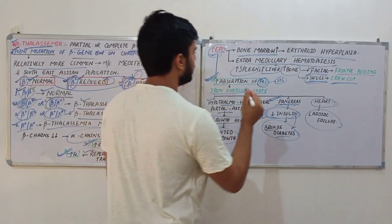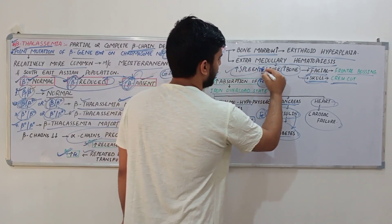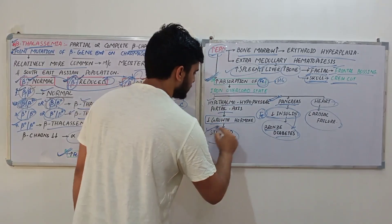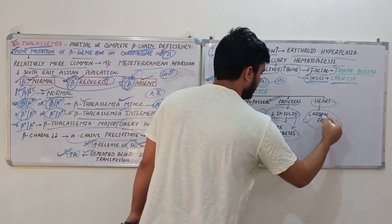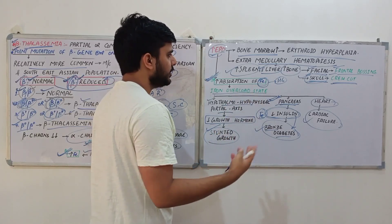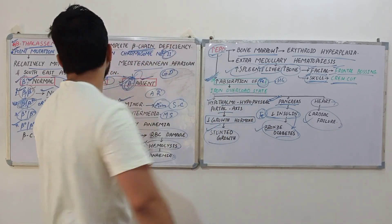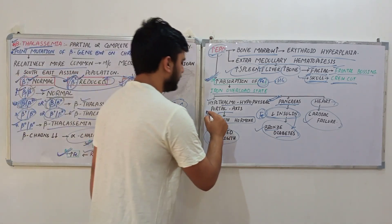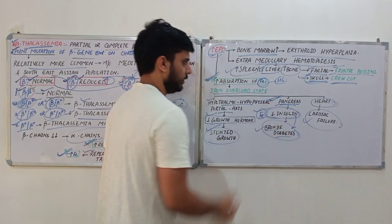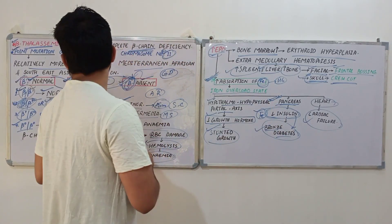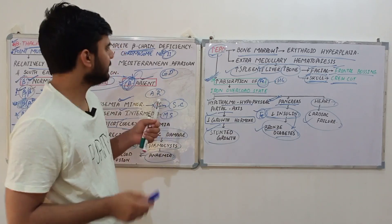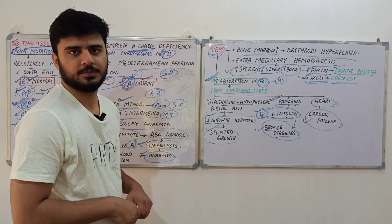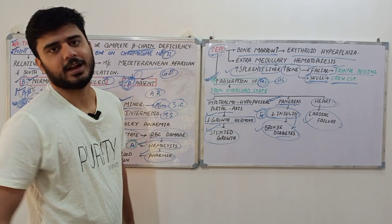The clinical findings of beta thalassemia major include splenomegaly, hepatomegaly, frontal bossing, crew cut appearance, stunted growth, bronze diabetes, and cardiac failure. Lab findings include increased serum iron, decreased growth hormone, and decreased insulin. That's everything regarding thalassemias. In the next lecture we will discuss anemias. Please subscribe to the channel, thank you for watching.